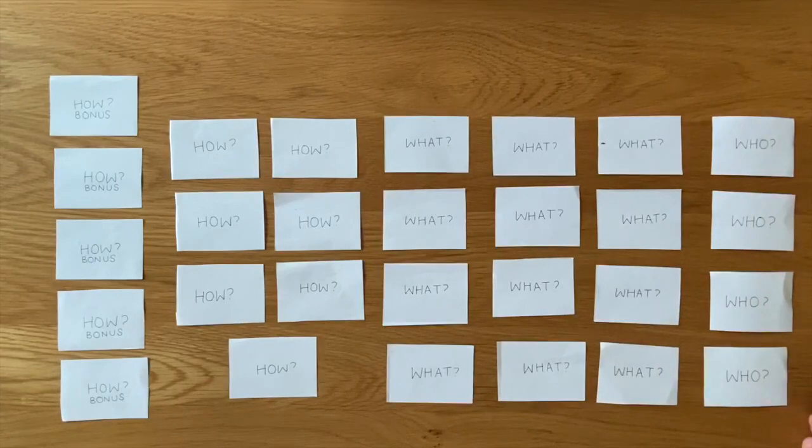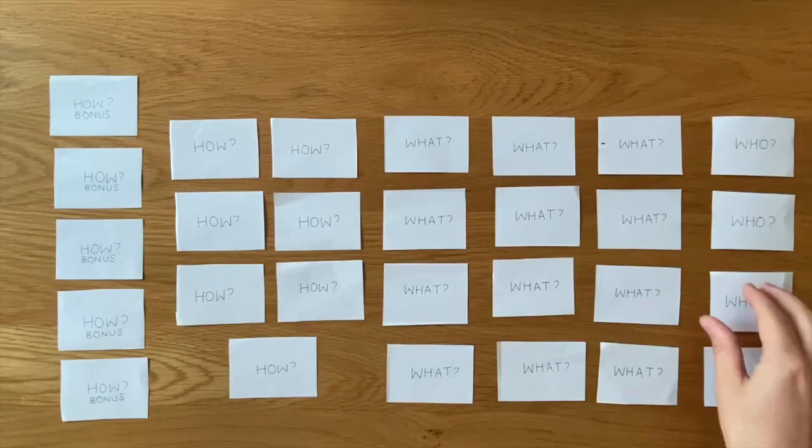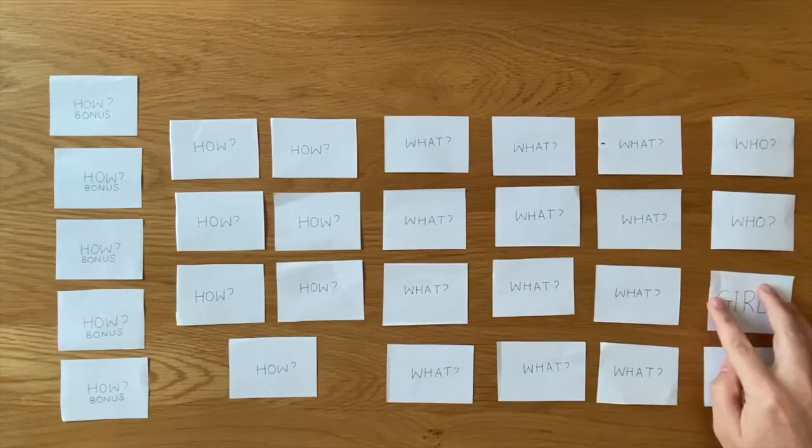So first of all they choose a number in our who line. So we have number one, two, three or four and I ask them to choose and they choose in this instance card number three. So we turn it over and we have girls.